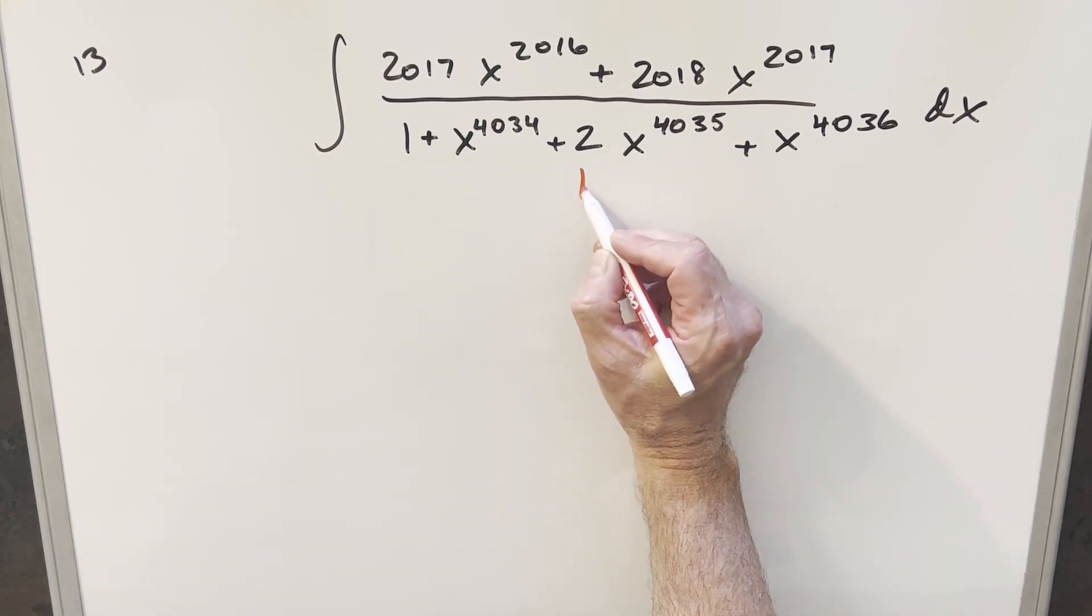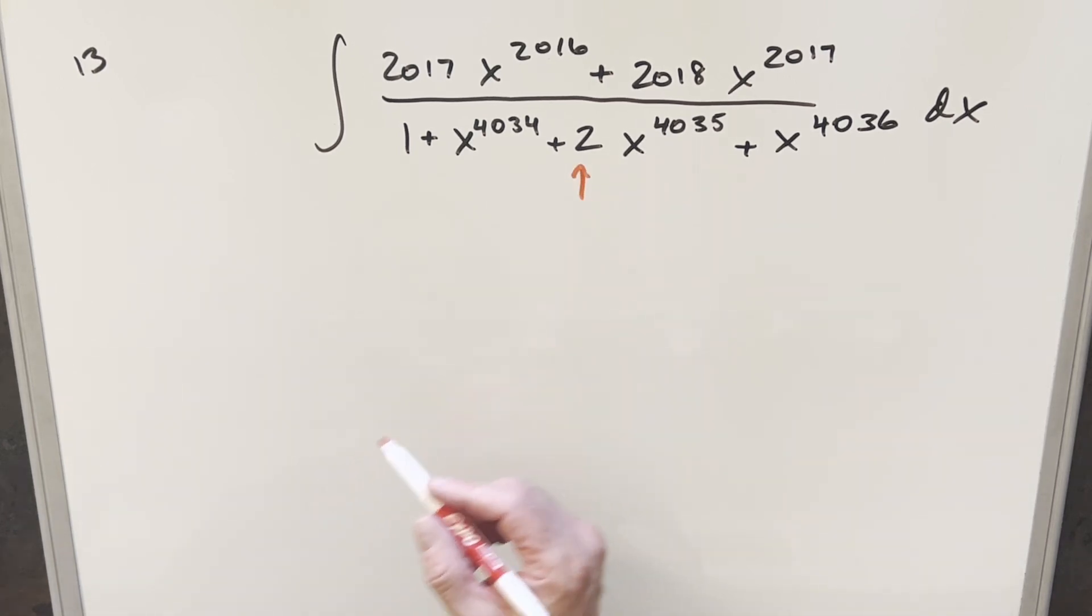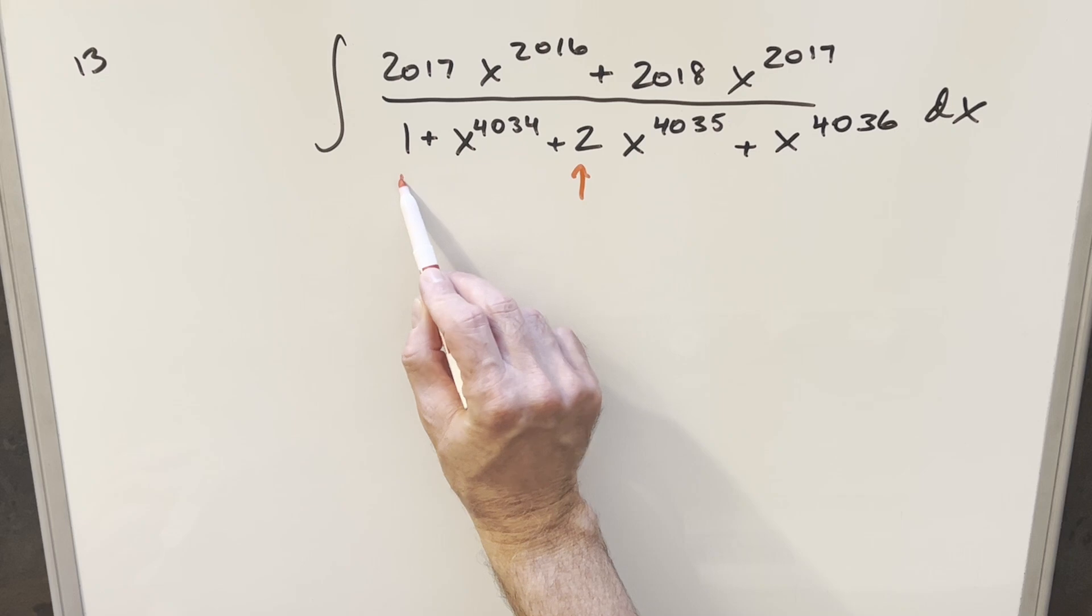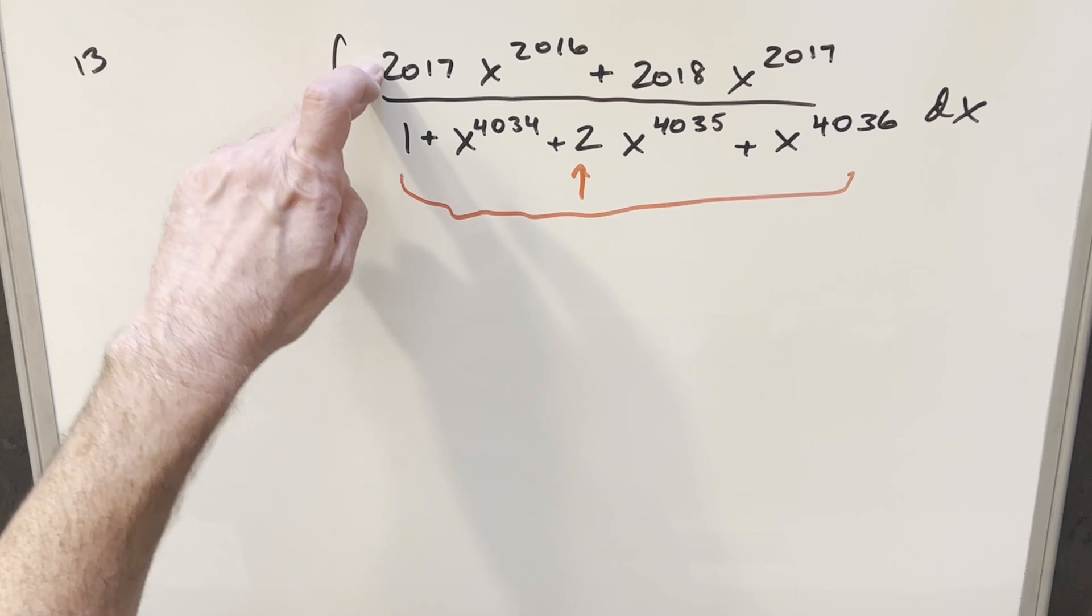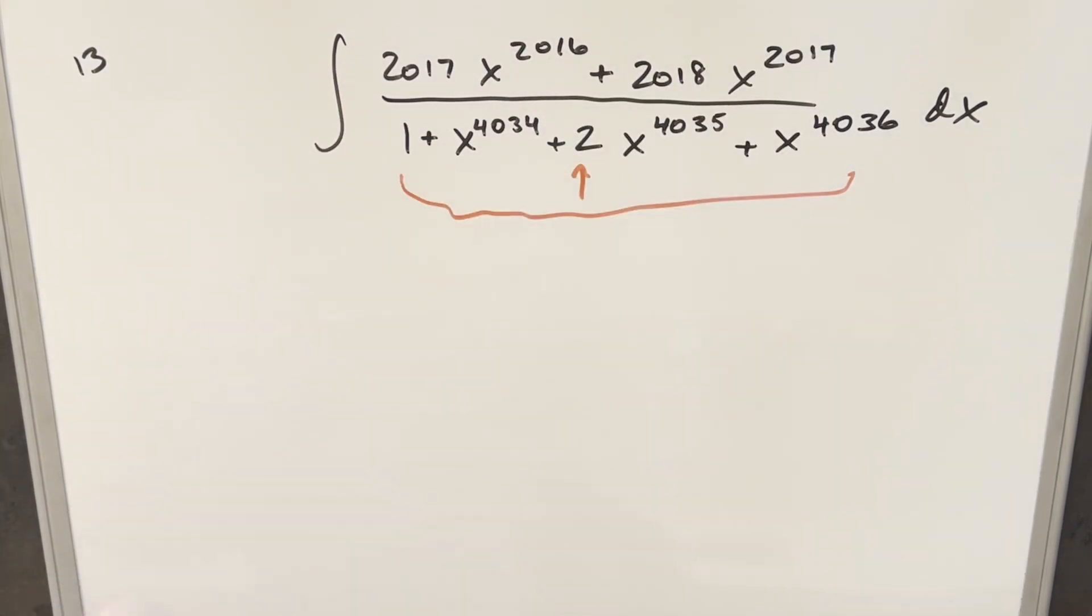When I was looking at it, noticing this 2 right here, I kind of freaked out because I was thinking this whole thing isn't factorable, so I don't really know how to simplify it. But I think the numerator gives a good clue the way we have the coefficient is 1 greater than the exponent here and here.